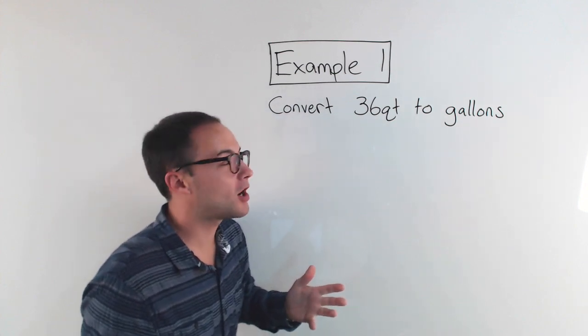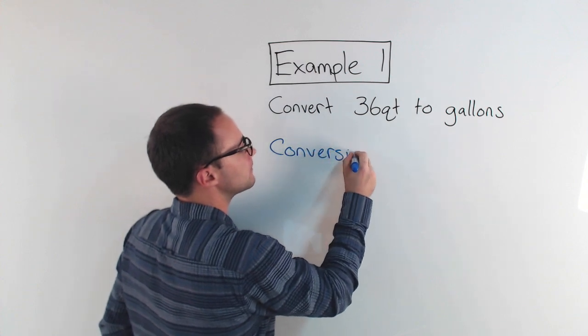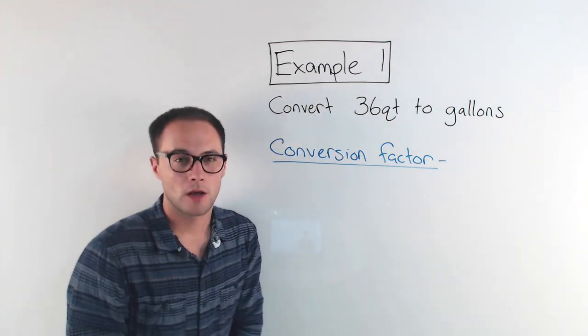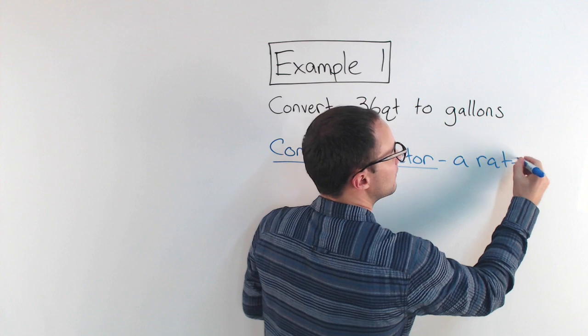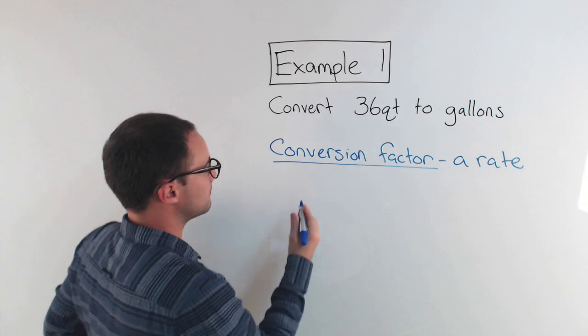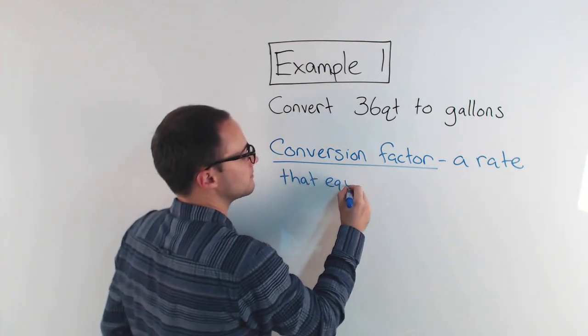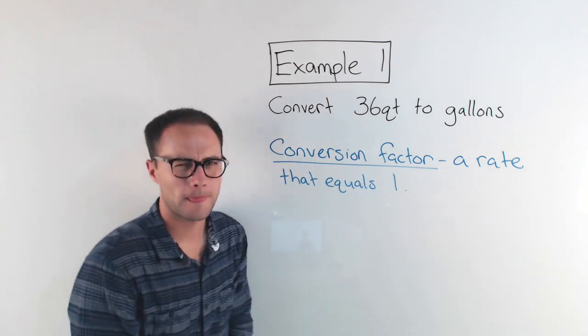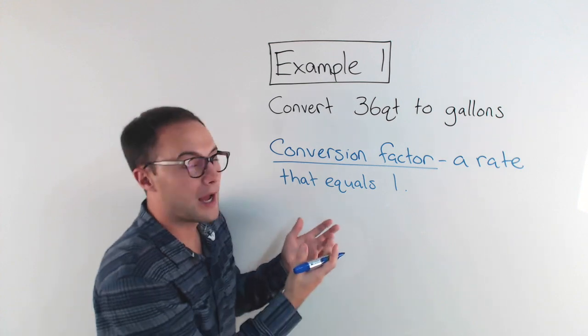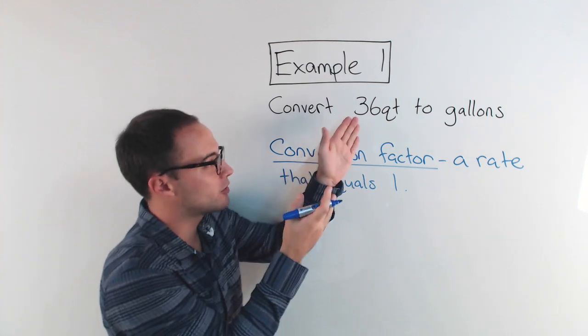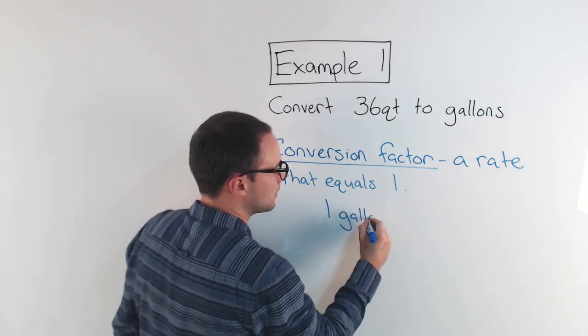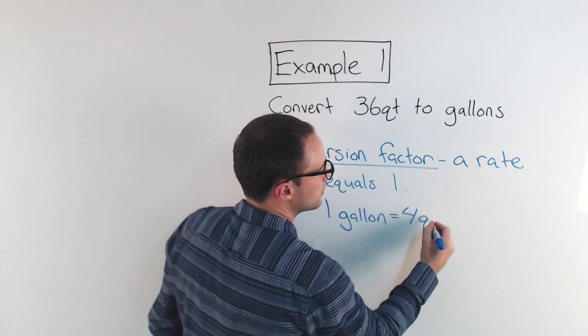And what that information is called, we need the conversion factor. Conversion factor is simple. It's just a rate. If you saw the previous videos, we did one on rates. We need a rate. A conversion factor is a rate that equals one. Now that sounds a bit confusing, but let me demonstrate. So for this example, I need the information for a certain specific conversion factor going from quarts to gallons.